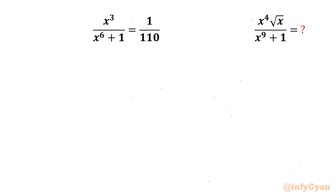Welcome back to Infigyan, my dear friends, in this very exciting and challenging video on algebraic expressions. Here we are going to evaluate x⁴√x over x⁹ plus 1, given the equation x³ over x⁶ plus 1 equals 1 over 110. Let us get started by considering this expression equal to e. Now I will note the condition on x: since we have √x involved, we can conclude x should be positive.